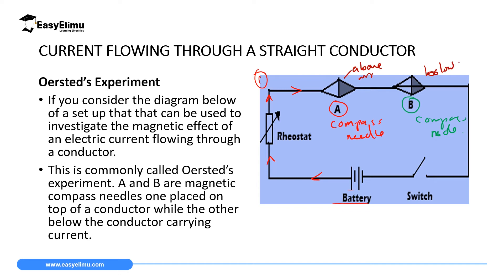Now the reason why compass needle A is above the wire is because we cannot see the wire on top of it. But the one which is below, we can still see a wire passing on top of this compass needle. So this one is placed above, then this one is placed below. Now what you do, you switch on your switch, and then observe what happens to the compass needle. Remember, a compass needle has a magnet inside it, and it deflects easily whenever there's a magnetic field around it.